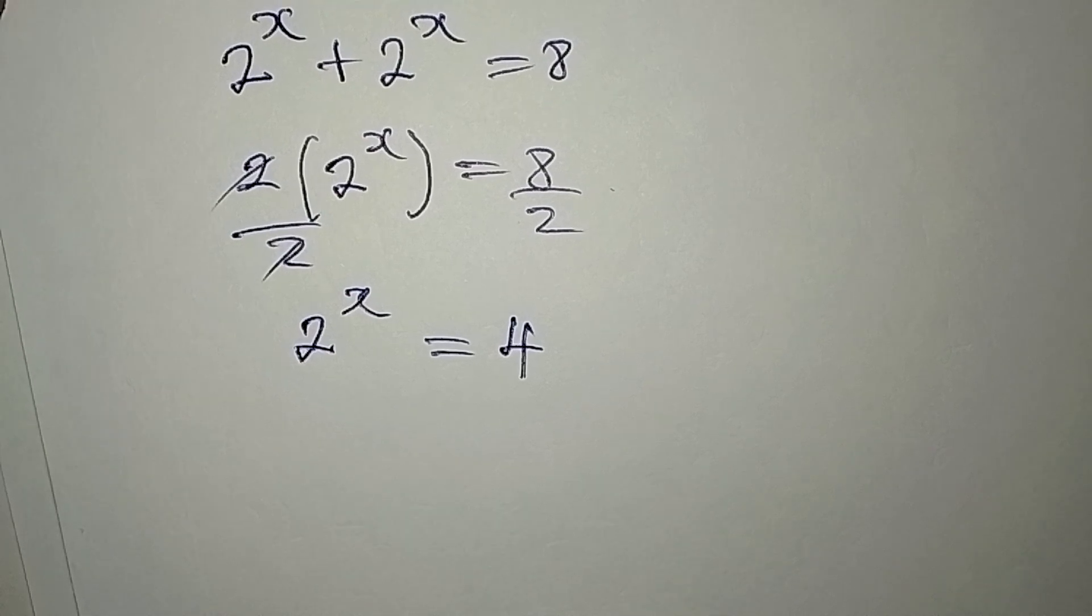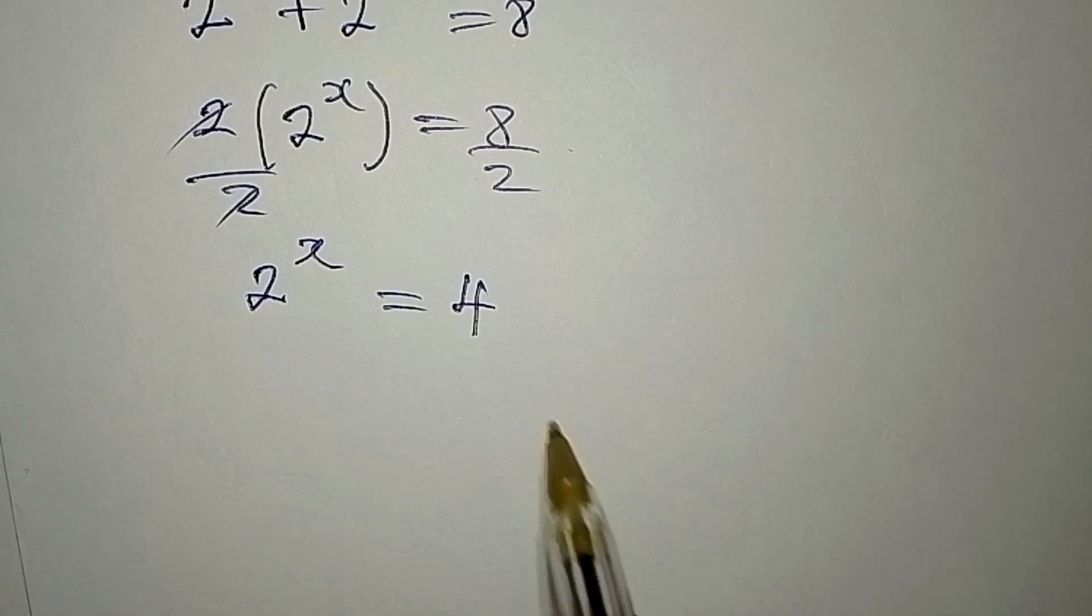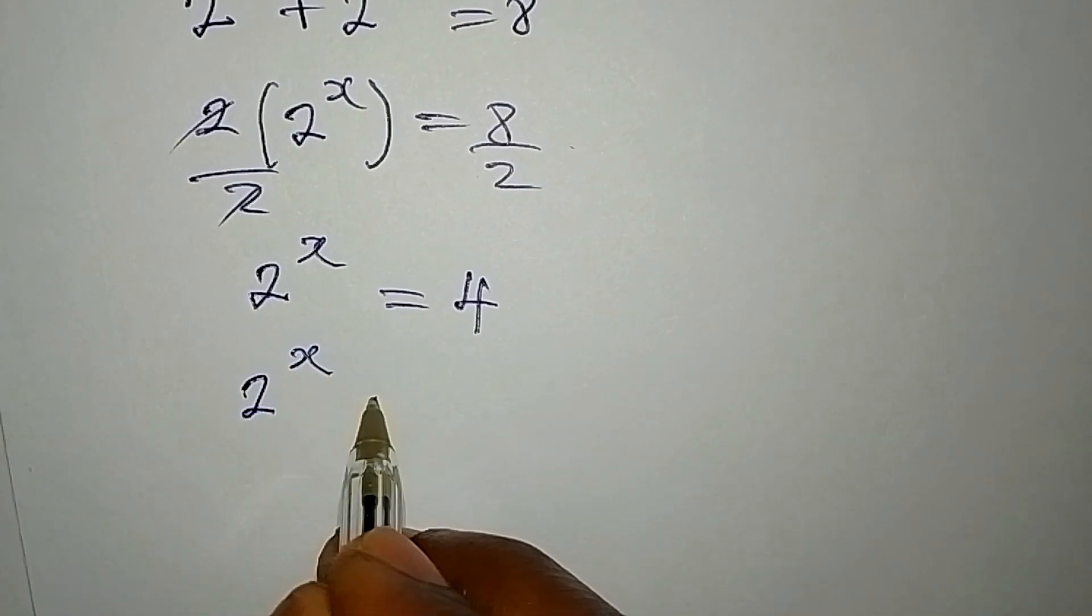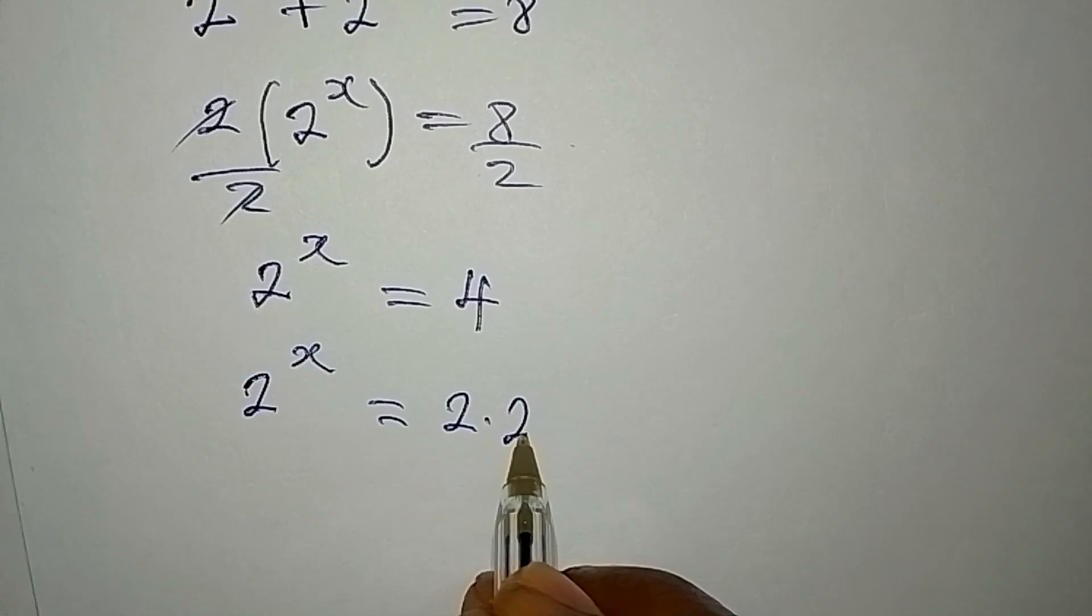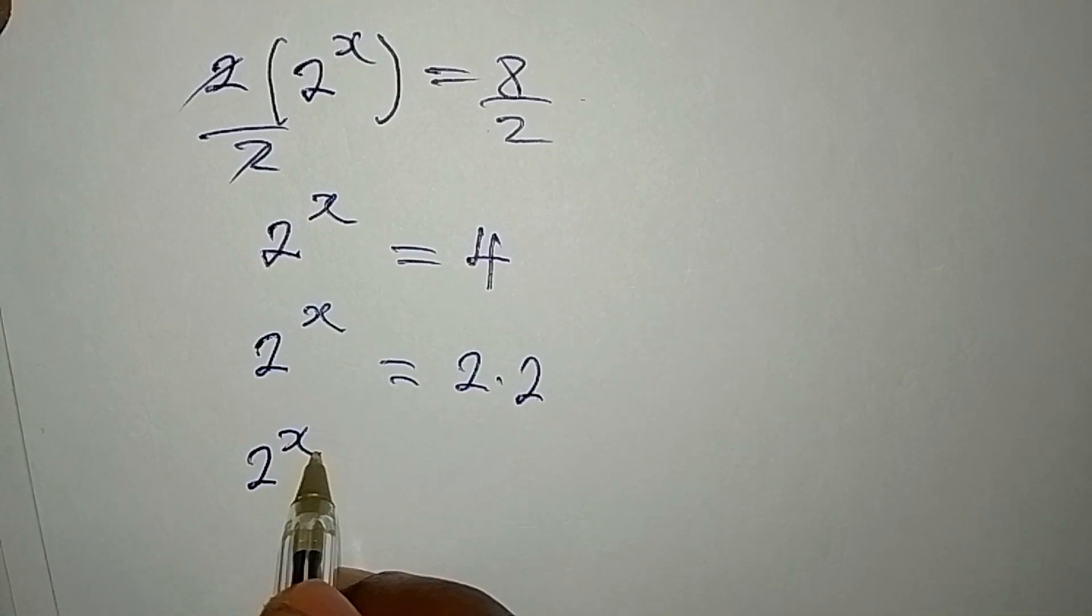Now what we did before, we introduced log, but now we are not going to introduce log. What we'll do is make sure that we have the same base. So 2 to the power of x is equal to 2 times 2, because 4 is 2 times 2.